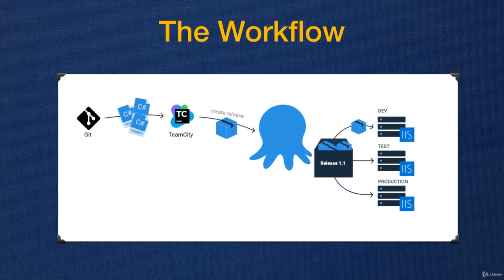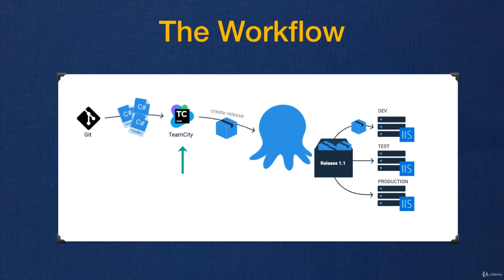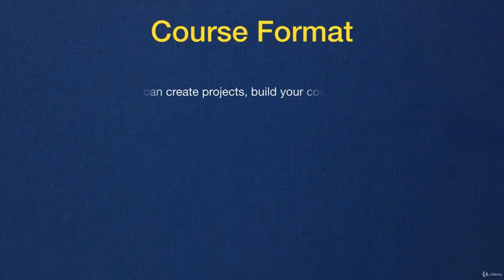This diagram from Octopus Deploy's website illustrates the full workflow we'll cover in this course. Imagine you maintain .NET code in a source code repository like GitHub. Developers make changes, TeamCity detects them, compiles the code, creates a package, and pushes it to Octopus Deploy. Octopus Deploy then delivers it to a development environment, then to testing where testers sign it off, and finally to production.